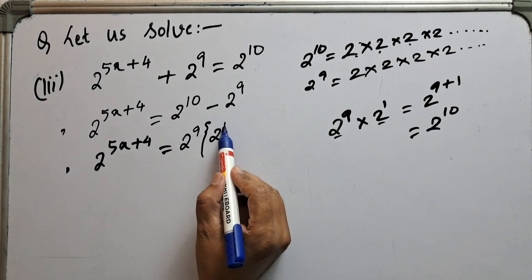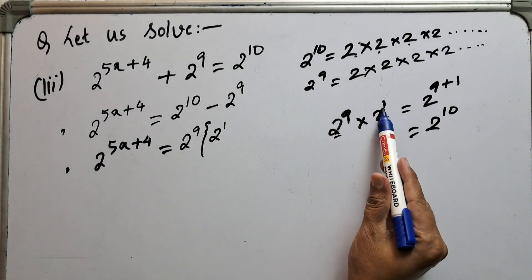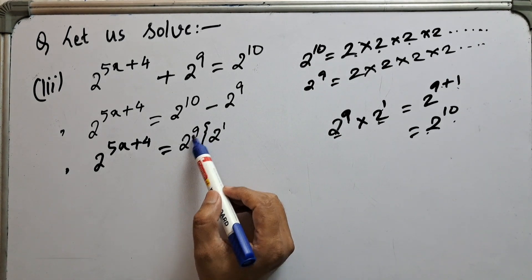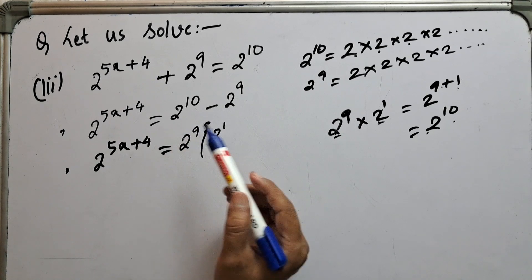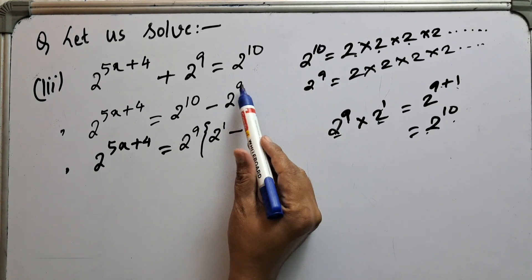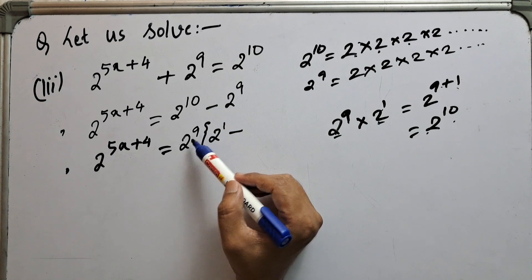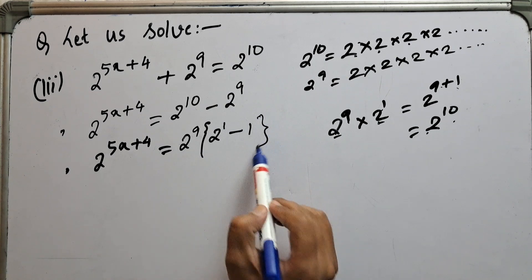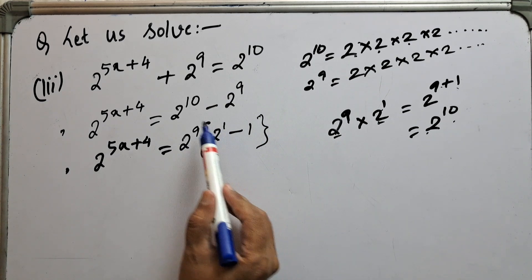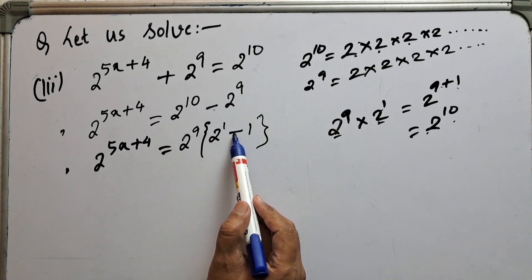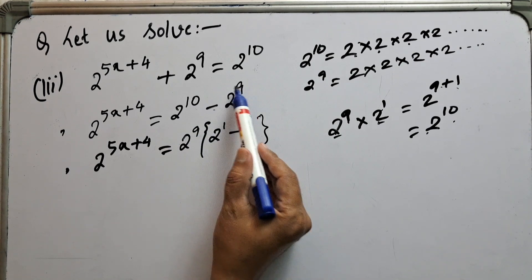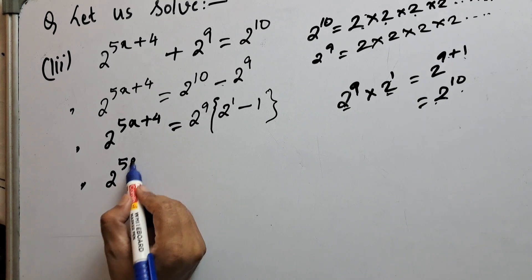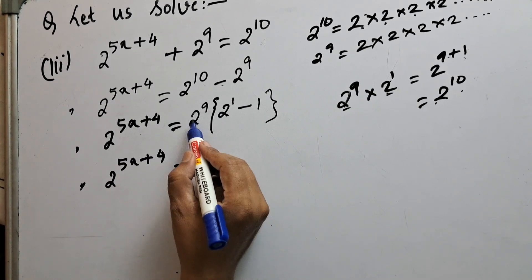So 2 to the power 10 equals 2 to the power 9 times 2 to the power 1. Taking 2 to the power 9 as common: we get 2 to the power 9 times (2 to the power 1 minus 1). Now 2 to the power 1 is 2, so 2 minus 1 is 1. Therefore: 2 to the power 5x+4 equals 2 to the power 9 times 1, which is 2 to the power 9.